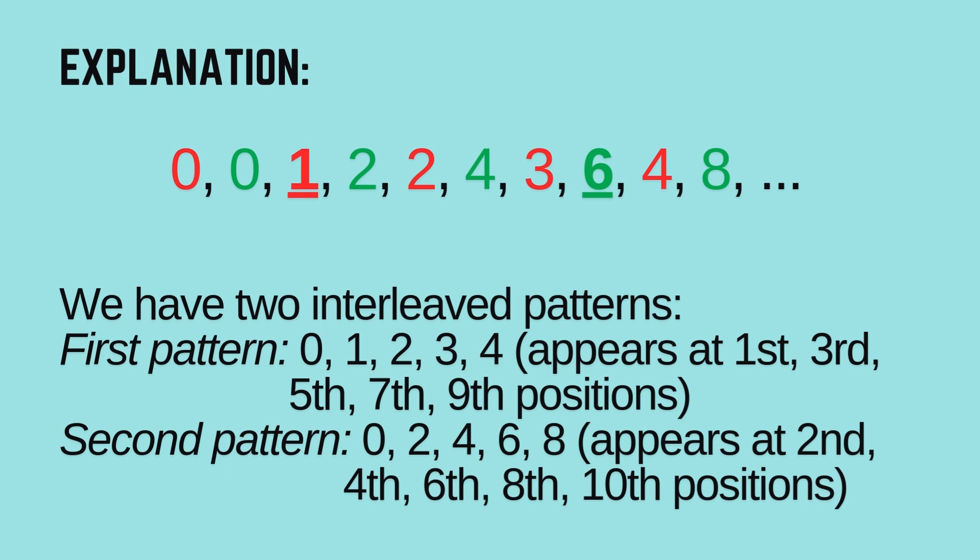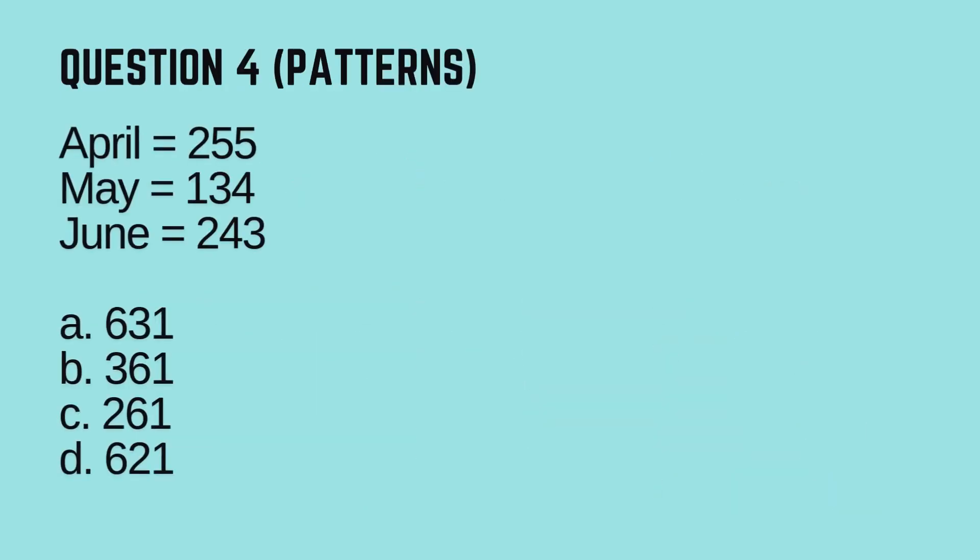Question 4, Patterns. April equals 255, May equals 134, June equals 243, July equals 142, August equals blank. Options: A, 631; B, 361; C, 261; D, 621. Timer starts now!